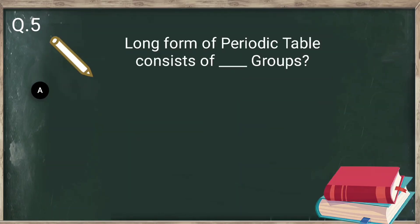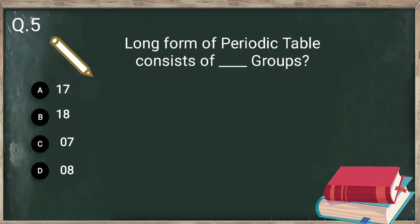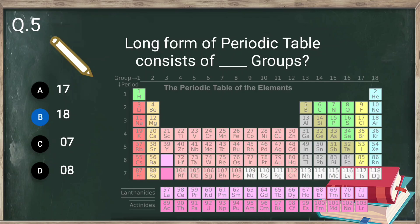Question number 5: the long form of periodic table consists of how many groups? There are 18 groups in the periodic table, numbered 1 to 18. In the periodic table there are 18 vertical rows known as groups, while there are 7 periods. The modern periodic table is also known as the long form of periodic table.